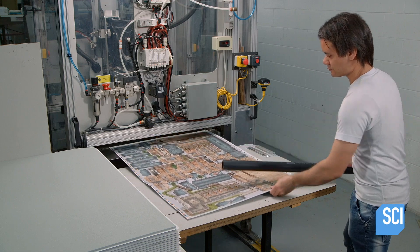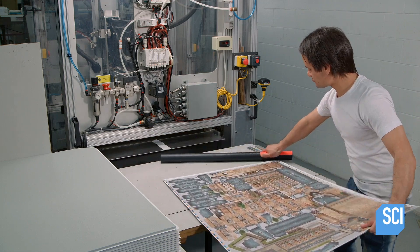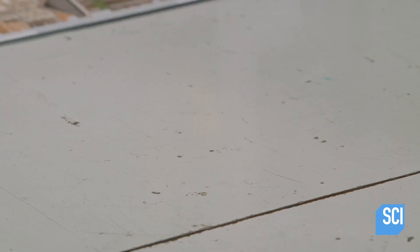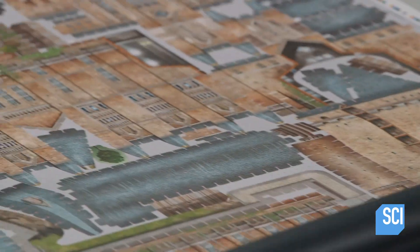As the laminated foam exits the machine, a technician rolls a tube over the foam, pressing out any remaining air bubbles to ensure the paper adheres fully.